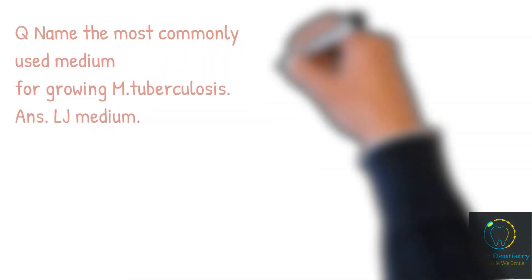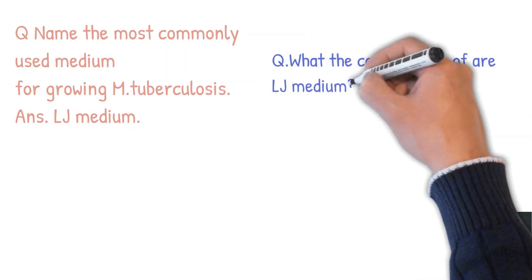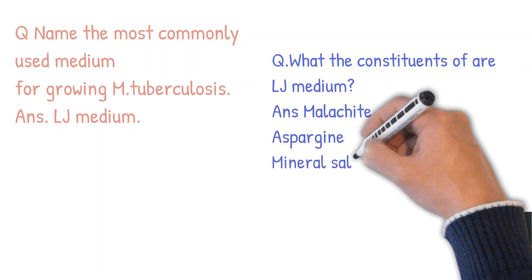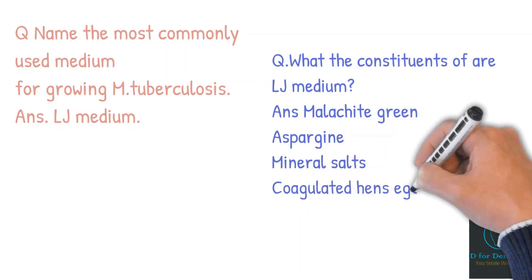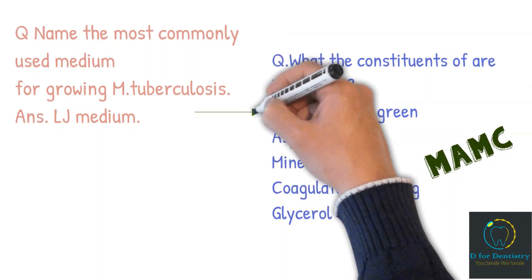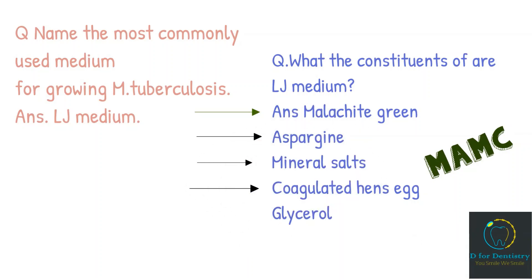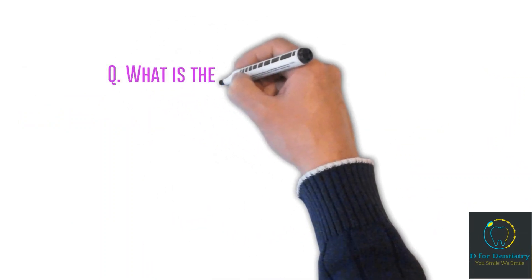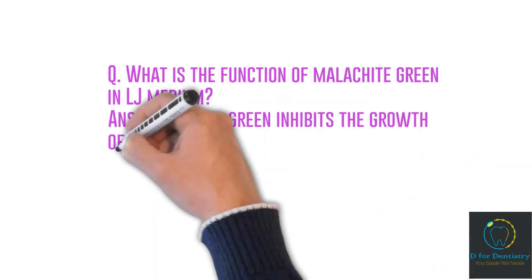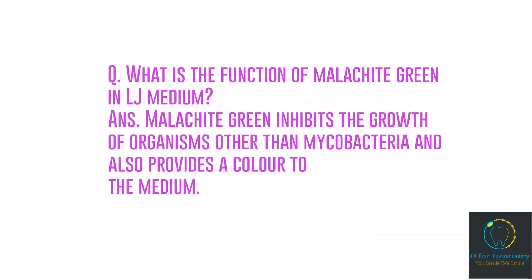Question: What are the constituents of LJ (Lowenstein-Jensen) medium? Answer: Malachite green, asparagine, mineral salts, coagulated egg and glycerol. You can remember this with the mnemonic MAMC — Maulana Azad Medical College — M for malachite green, A for asparagine, M for mineral salts, C for coagulated egg, and G for glycerol. The function of malachite green in LJ medium is to inhibit the growth of organisms other than mycobacteria and also to provide color to the medium.